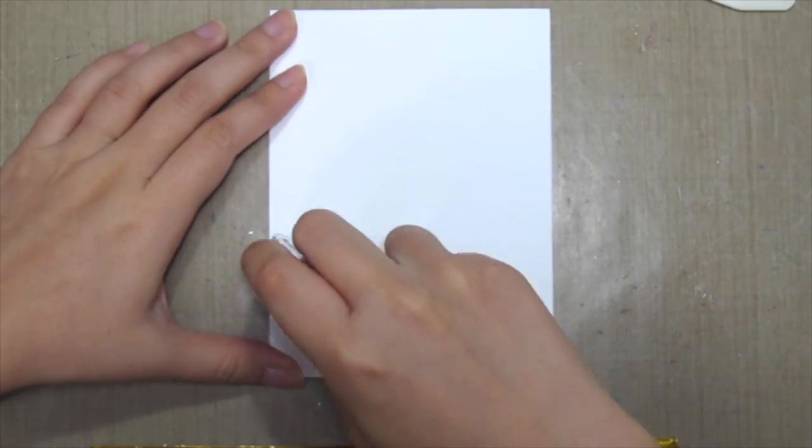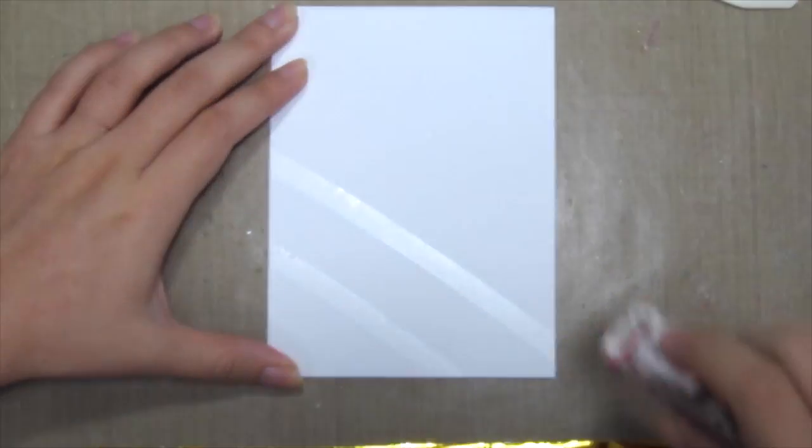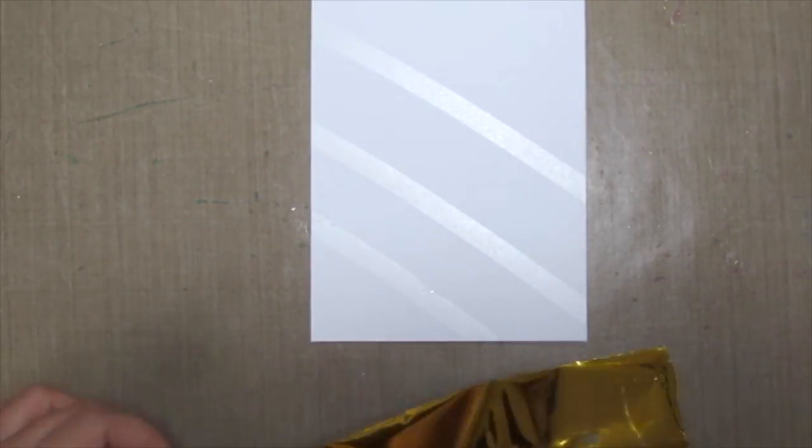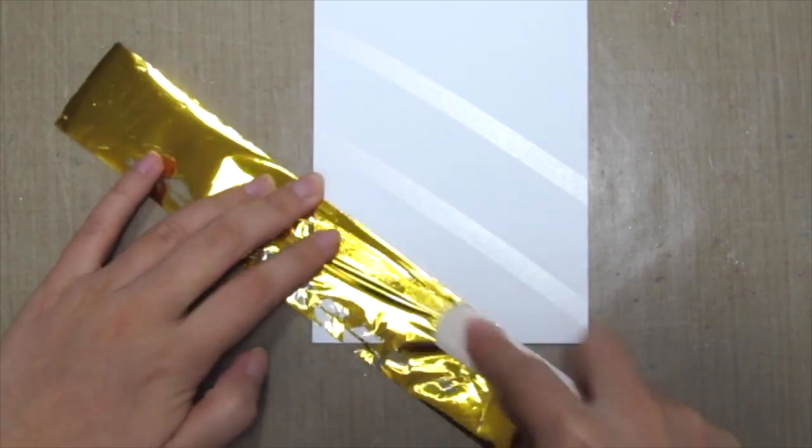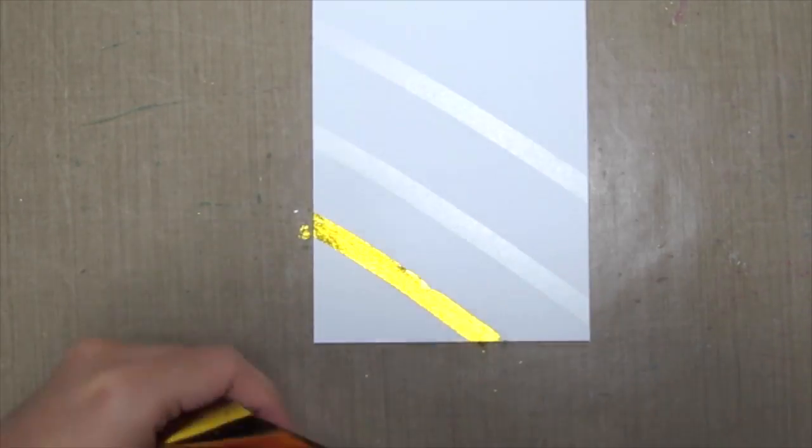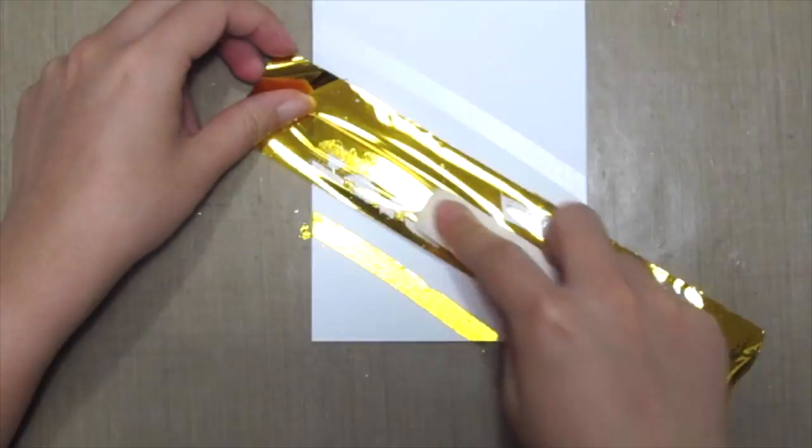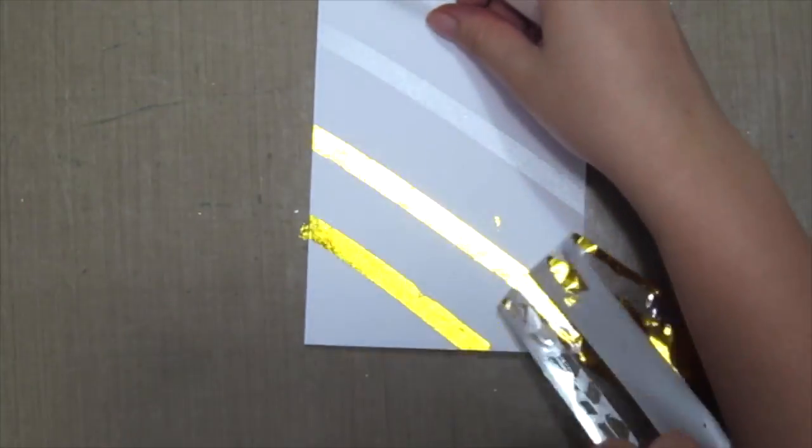First, grab your tape adhesive and run it onto your cardstock. Then grab your foil and your bone folder and press it onto the tape, and there you have it—easy peasy.